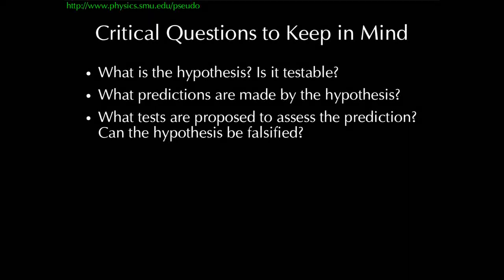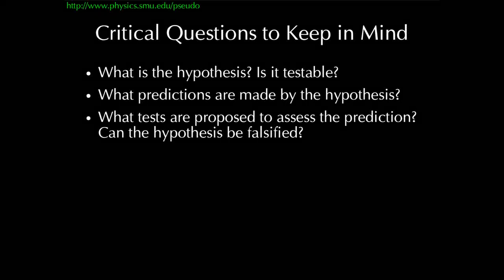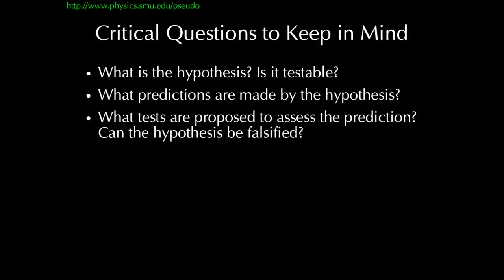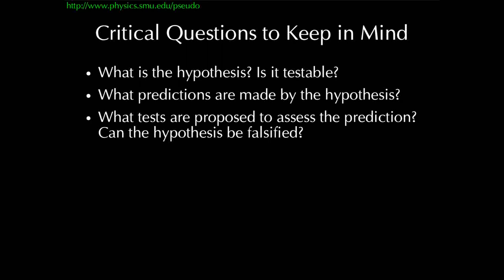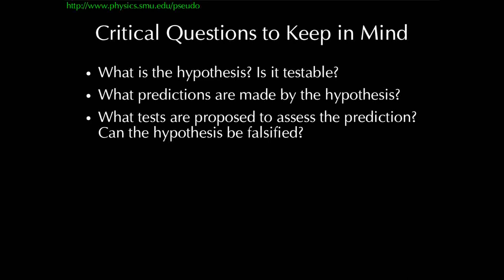Things I want you to keep in mind: when an explanation of the natural world is offered, what is the hypothesis? Is that hypothesis testable? What predictions are made by the hypothesis? What tests are proposed or can be proposed to assess the predictions? And most importantly, can the hypothesis be falsified? That is, if a proposition is made to explain observations in the natural world, can that hypothesis actually meet a test where it can be ruled as wrong? That's a critical element of any scientific idea. Surviving those tests repeatedly is what takes you from hypothesis to scientific theory and eventually to things like a law.